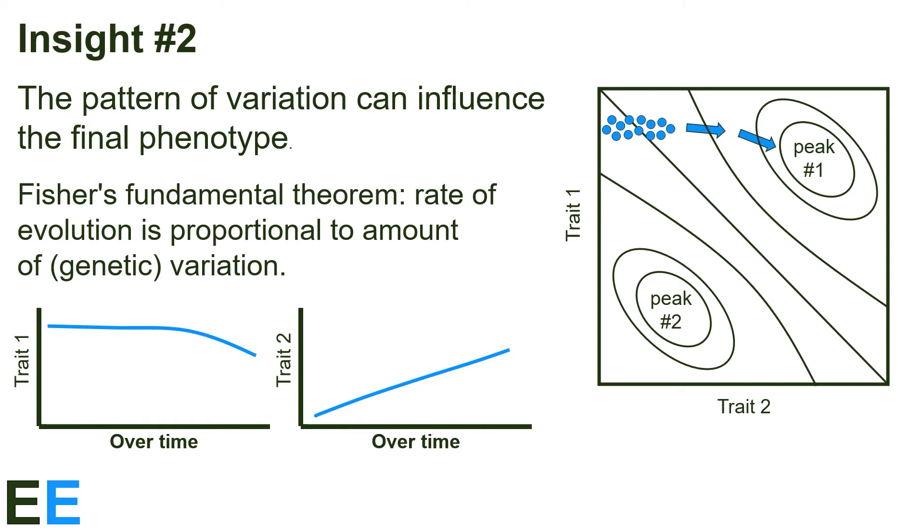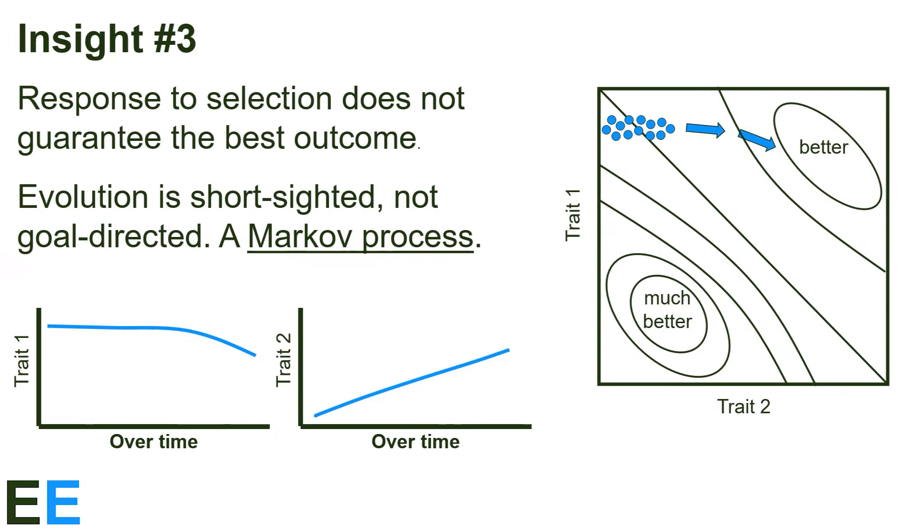Our second insight comes from the first. The pattern of variation can influence the final phenotype. In this figure, the population starts in a fitness valley. The landscape has two peaks, so selection is acting to draw the population to both the top right and the bottom left. However, since there's more variation in the horizontal direction, the population will respond to selection on trait two better, and the population will be drawn to peak number one. Looking at the plots of the separate traits now, we can see how trait two changes quickly from the beginning, with trait one changing just a little at the end.